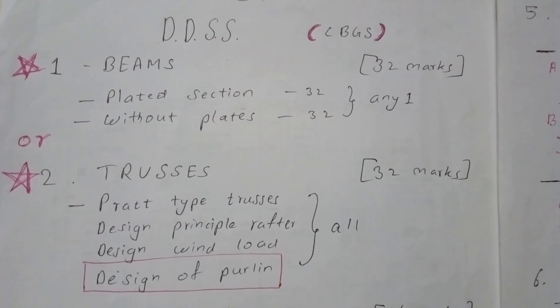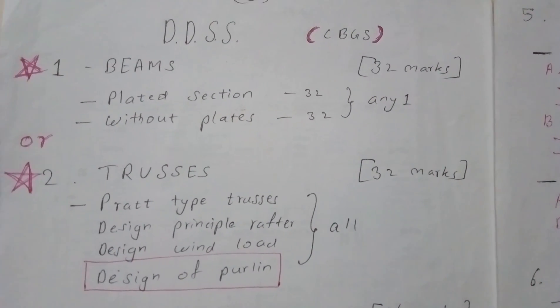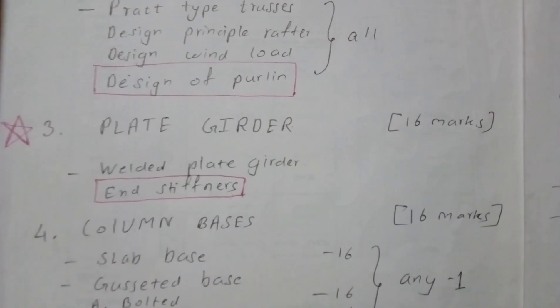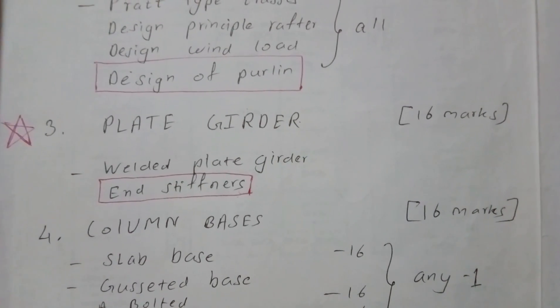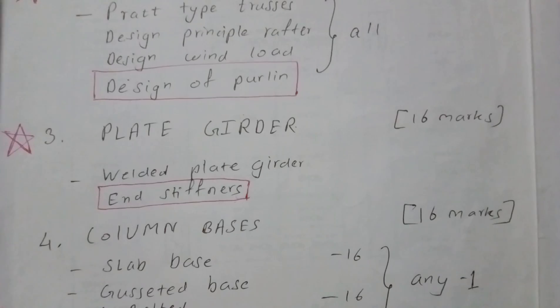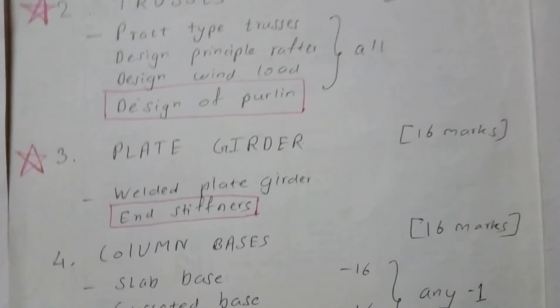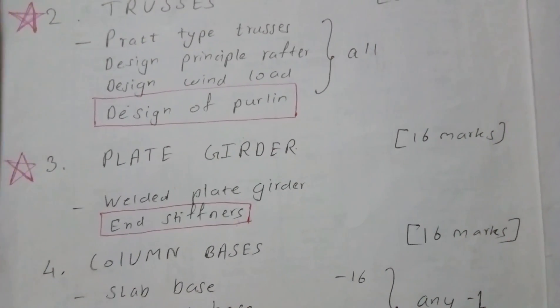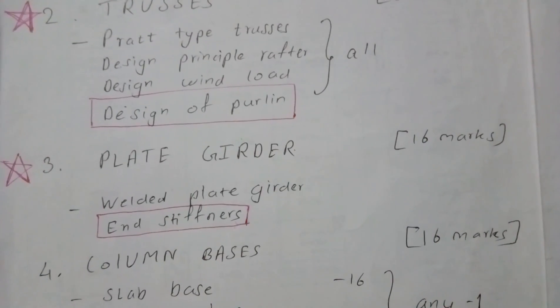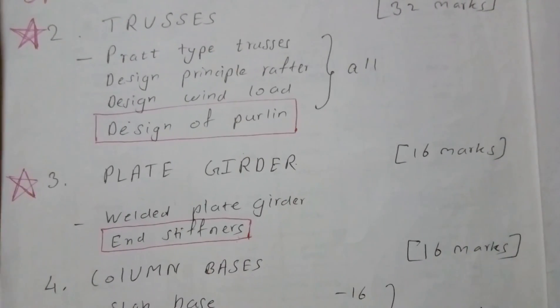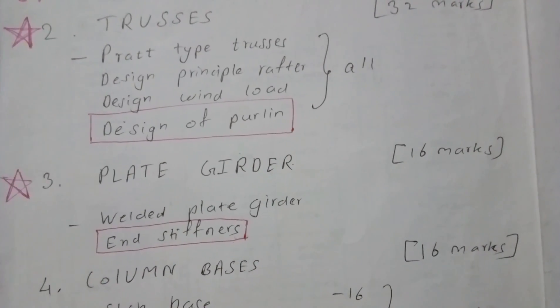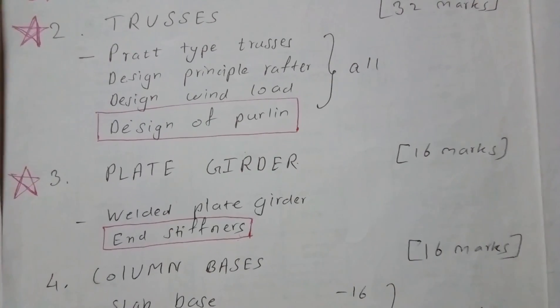After the first question, we can expect 20 to 25 marks. The next compulsory topic is Plate Girder. Only one question is asked — design a welded plate girder — carrying 16 marks. End stiffeners may also be asked as a second part, but they are very rarely asked; they appeared in December 2016. If you have little time, do only the welded plate girder and skip end stiffeners.